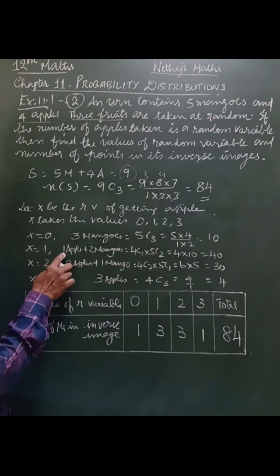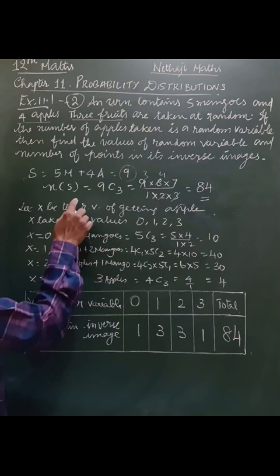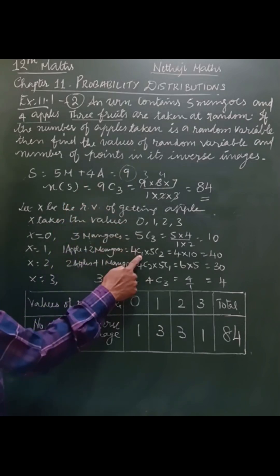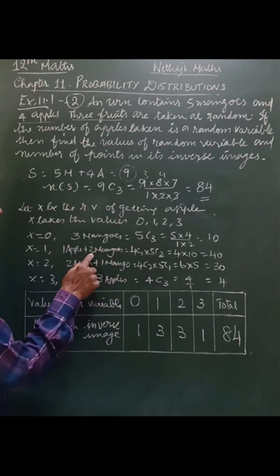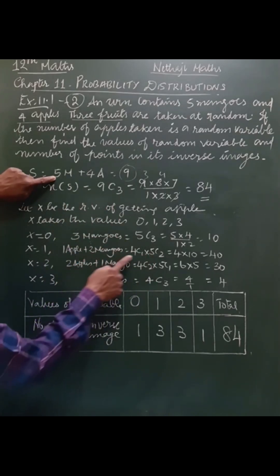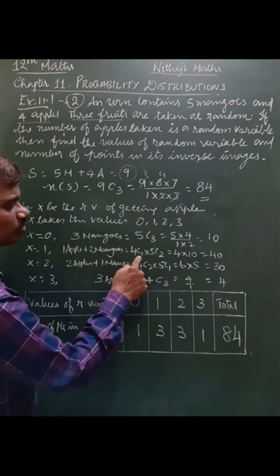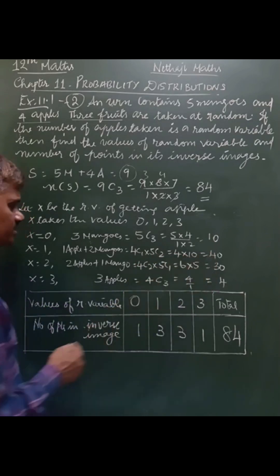Like that, x equals 1 means 1 apple, 2 mangoes. So 1 apple: from 4 apples I have to select 1. So 4C1 into 5C2. 4C1 is 4. 5C2 would be 10. 4 times 10 is 40.